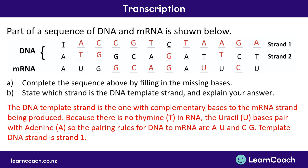In our answer we want to say that the DNA template strand is the one with complementary bases to the mRNA being produced. There is no thymine in RNA — T has been replaced with U — so the pairings for DNA to mRNA are A to U and C to G. Therefore the template strand is strand 1, because T has been matched with A and A has been matched with U. And that is the process of transcription.